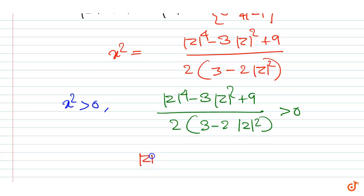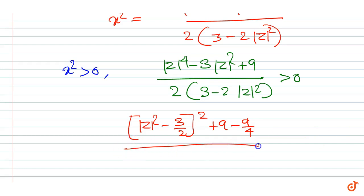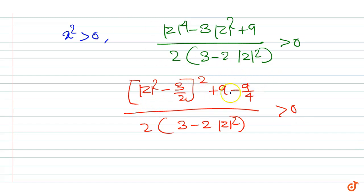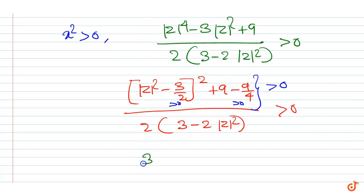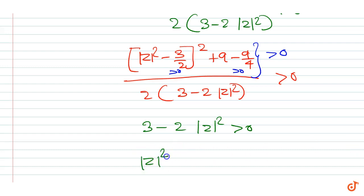The numerator can be written as (|z|² - 3/2)² + 9 - 9/4, which is always greater than 0. Since the numerator is greater than 0, it requires that 3 - 2|z|² > 0. That is, |z|² should be less than 3/2.